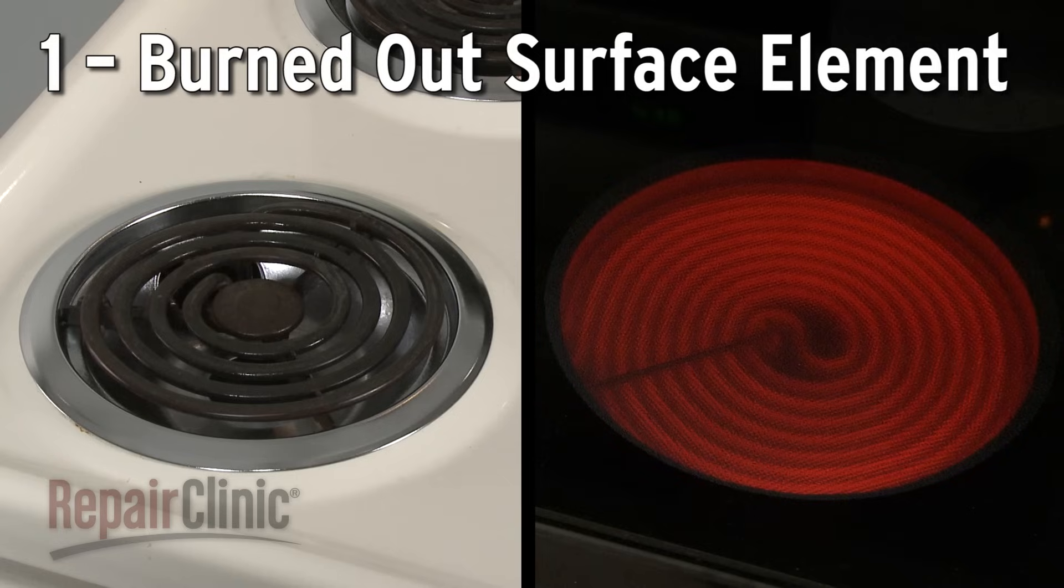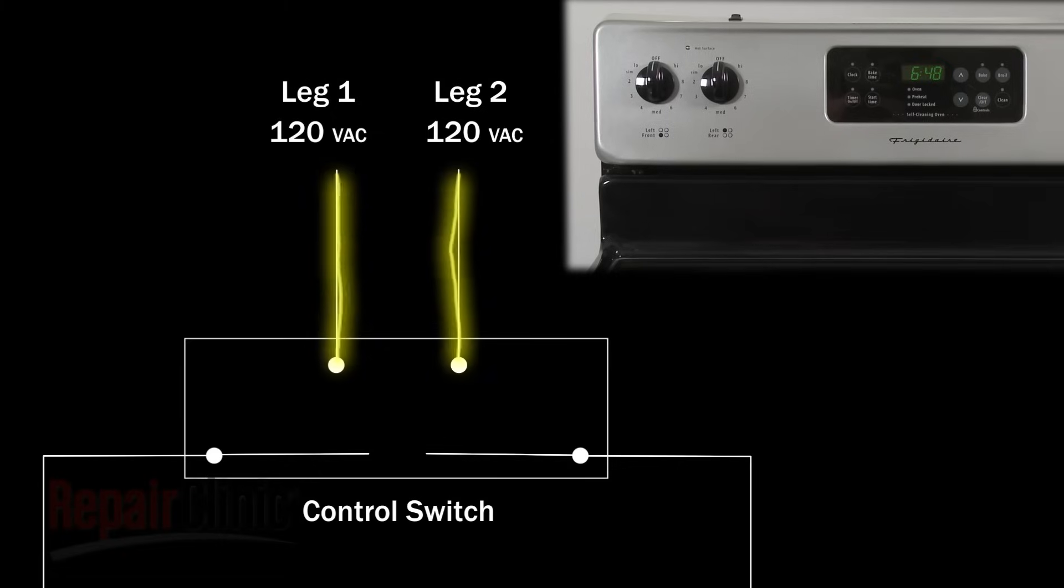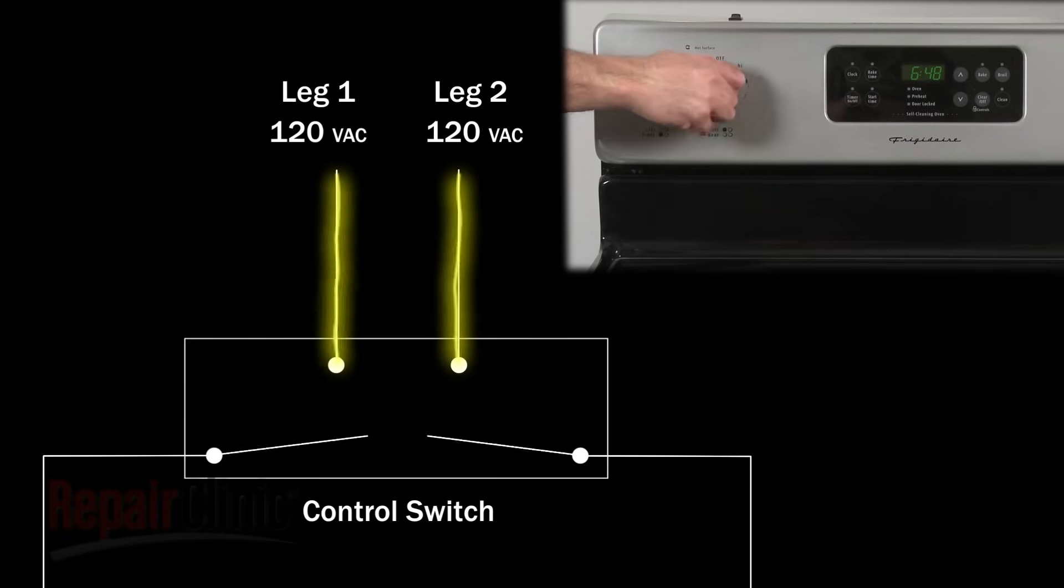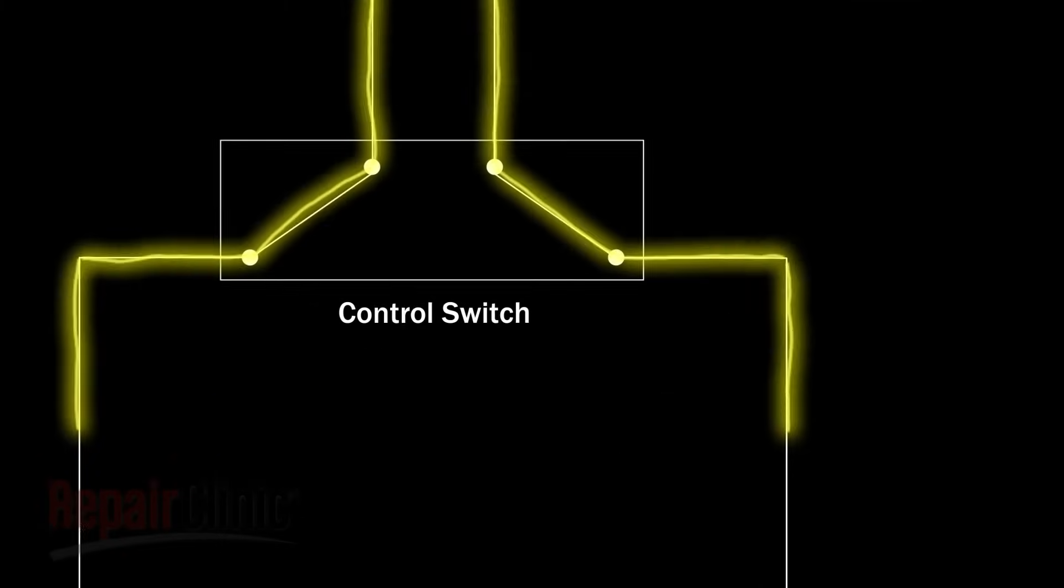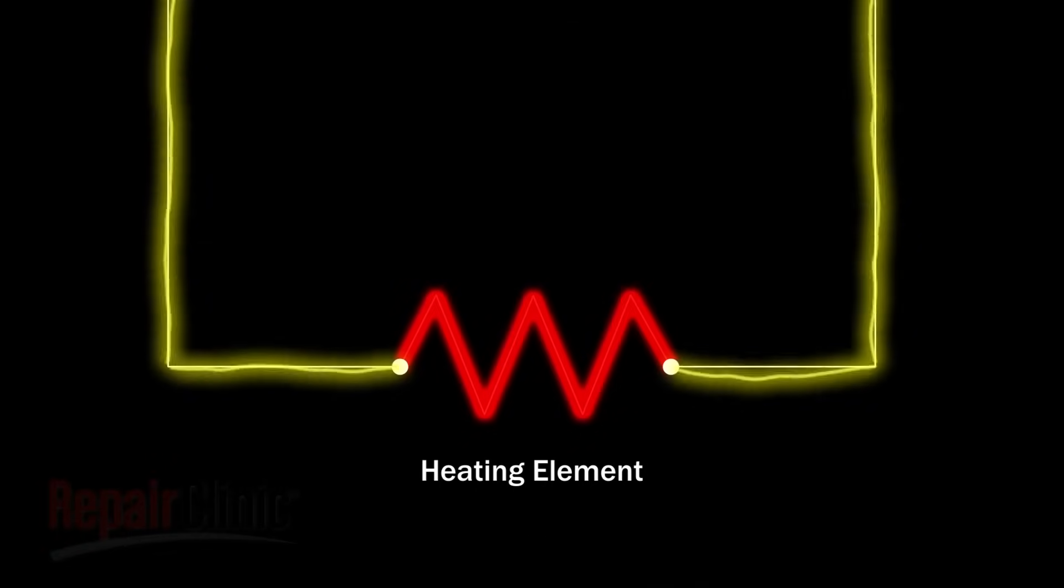Electric ranges have two common styles of surface elements: a conventional coil and a smooth top radiant coil. Each element is controlled by its own switch. When the selector knob is turned to a heat setting, the switch allows voltage to travel to the element, closing the circuit and causing the element to heat.